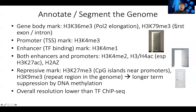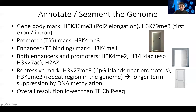H3K79 trimethylation is stronger in the first exon and the first intron, and then the later exons or gene bodies are much weaker. H3K4 trimethylation is a very strong mark near the beginning of the gene, and it tells the cell where a gene has the promise to be activated — like a door that's only slightly open to indicate this gene can be turned on.